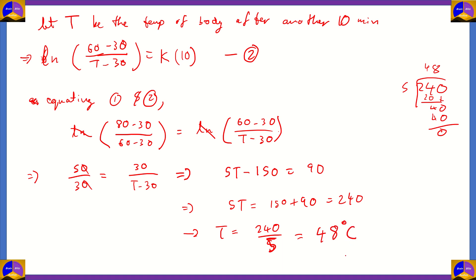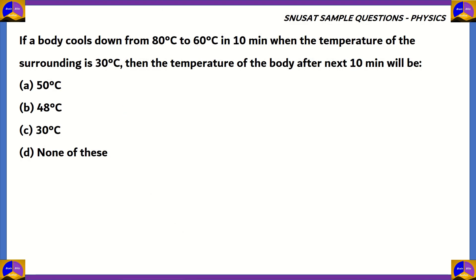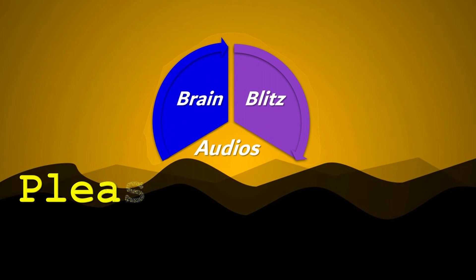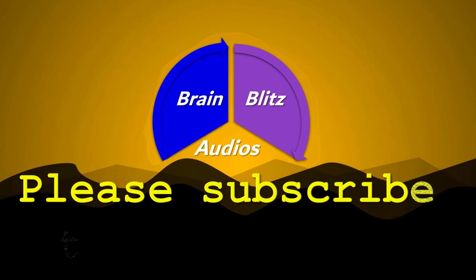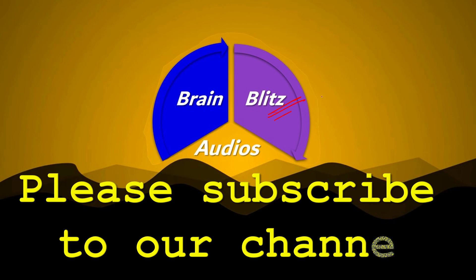So, the temperature after the second interval of 10 minutes is 48 degrees Celsius. The correct option is option B, 48 degrees Celsius. We used Newton's law of cooling — the time interval was the same and the constant K stays the same, so we equated the left-hand sides of both equations to find the final temperature. That concludes this episode of SNU-SAT Questions with Solutions. For more useful content, subscribe to our channel Brain Blitz Audios and click the bell icon for latest updates. Until the next episode, take care, stay safe, bye-bye!